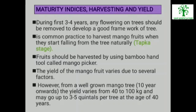Maturity Indices, Harvesting and Yield: During the first 3 to 4 years, any flowering on trees should be removed to develop a good framework of tree. Fruits generally require 95 to 115 days to mature after flowering. It is common practice to harvest mango fruits when they start falling from the tree naturally, that is the tapka stage. Harvesting should be done in the morning hours and fruits should be collected in plastic trays and kept in shade. All the fruits on the same tree may not mature at the same time; therefore, it is recommended to do 2 to 3 rounds of harvesting in an orchard at weekly intervals.